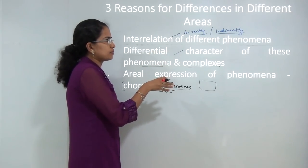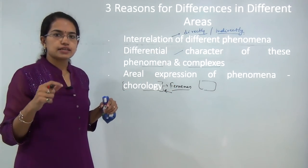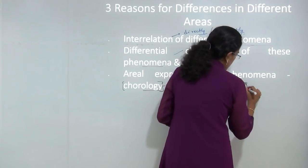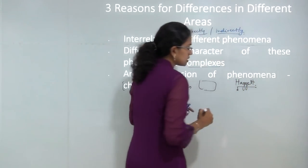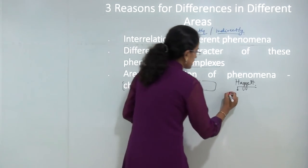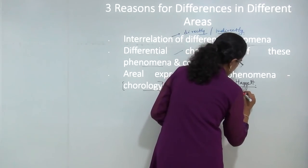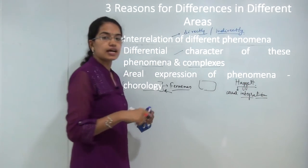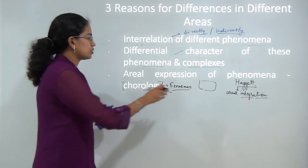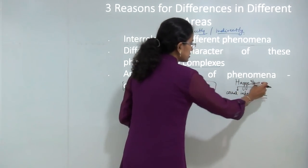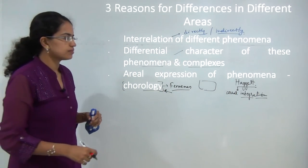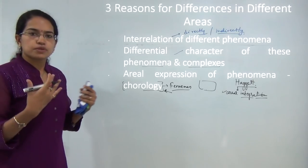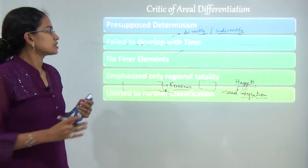When Hartshorne was highlighting the importance of differences among regions, at the same time there was Haggett who was trying to emphasize the concept of aerial integration. Under aerial integration, he was trying to say the basis is to integrate the regions rather than differentiate them. Haggett was one of the main critics of aerial differentiation theory, and he said it is important to have aerial integration rather than providing a differentiation for the area.